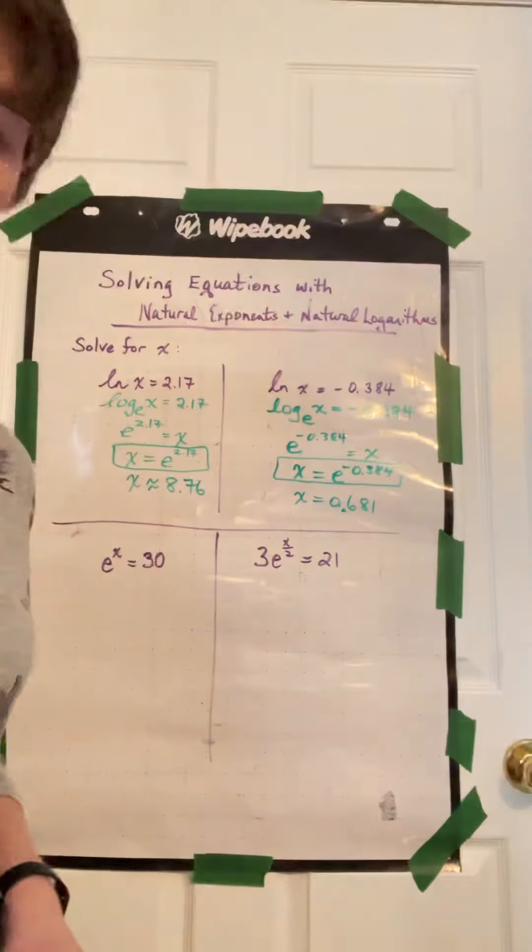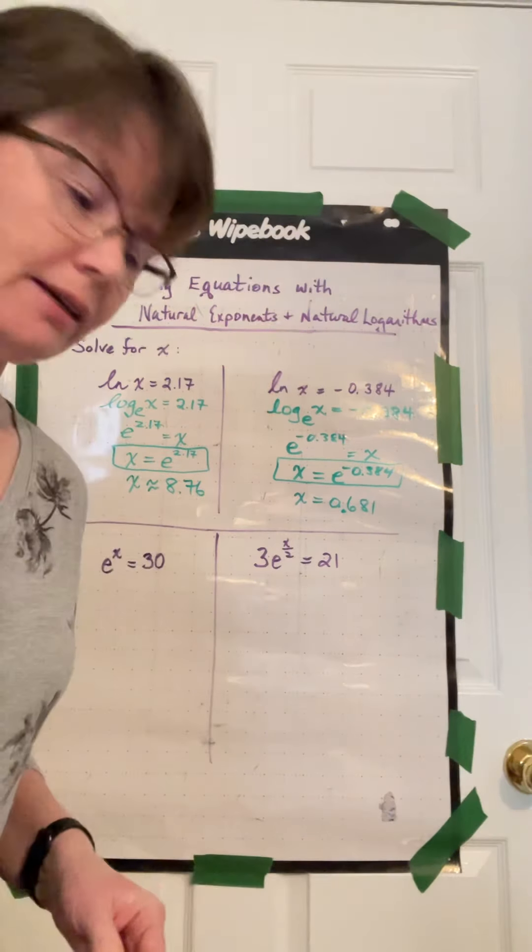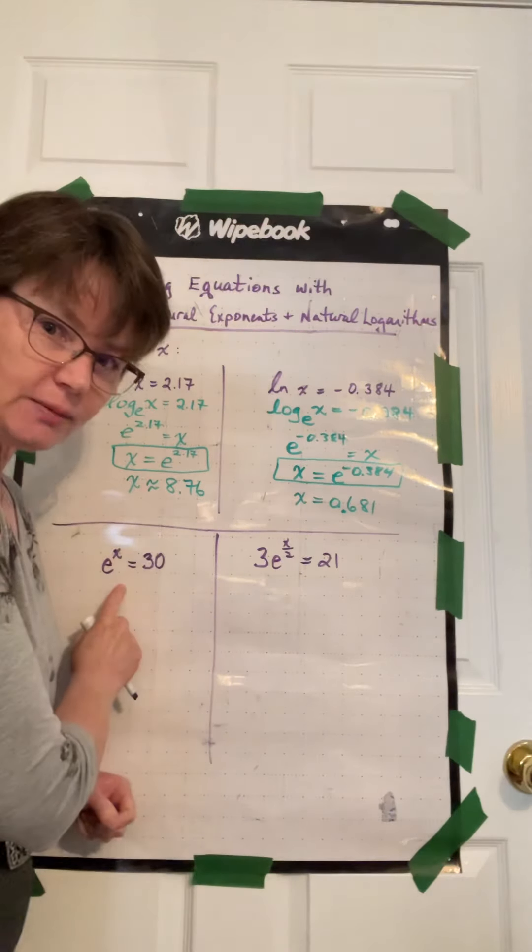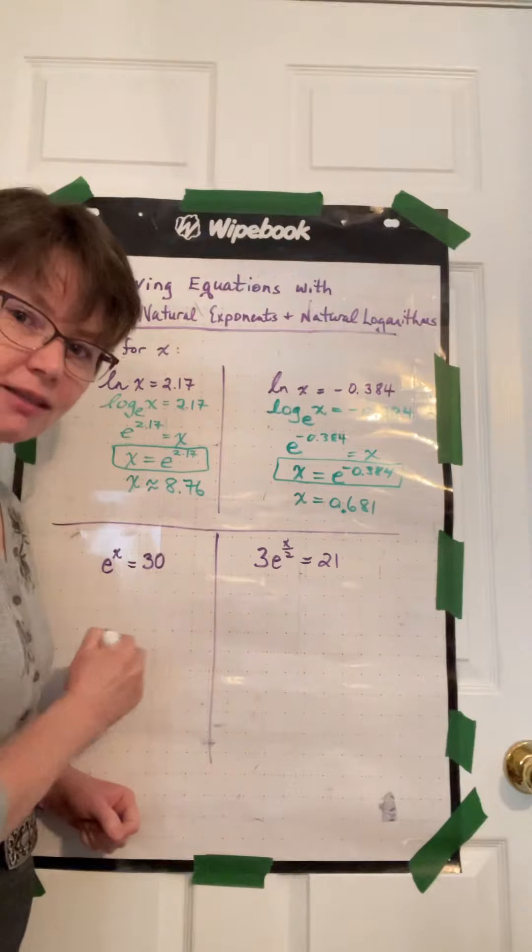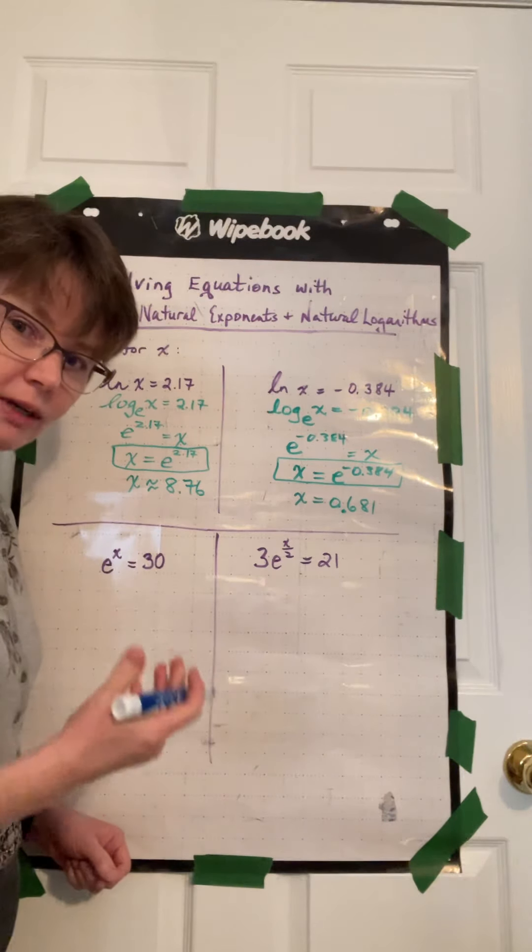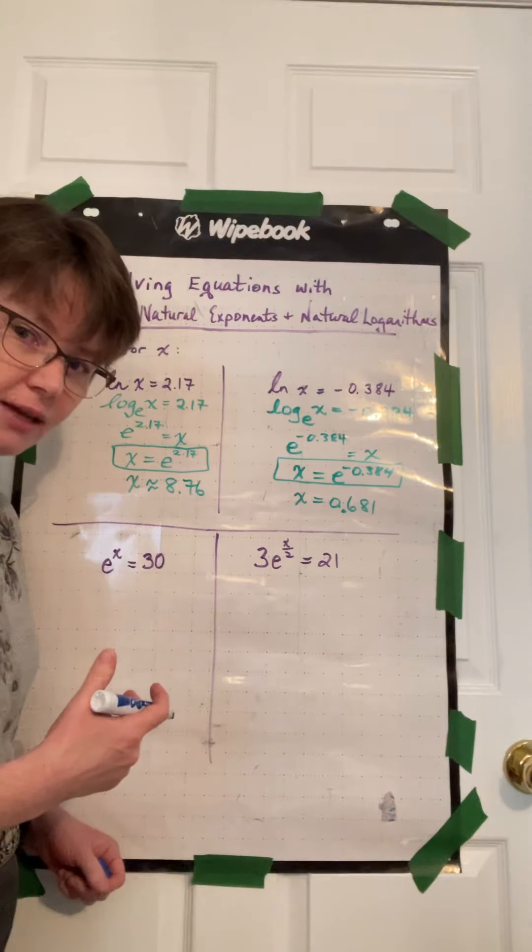Now let's move on to the exponents, the natural base here with an exponent, and we need to solve for x. So here we have e to the power of x equals 30. We need to solve for x. So two ways we can go about this.